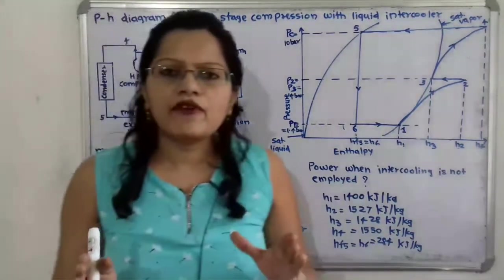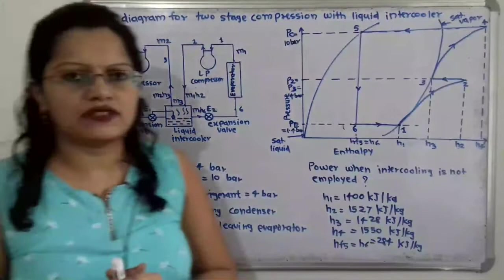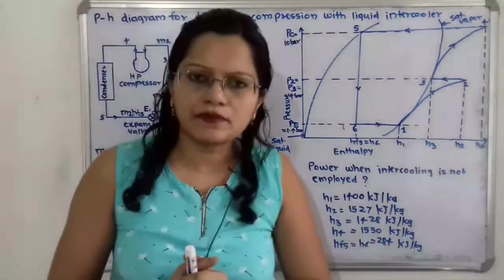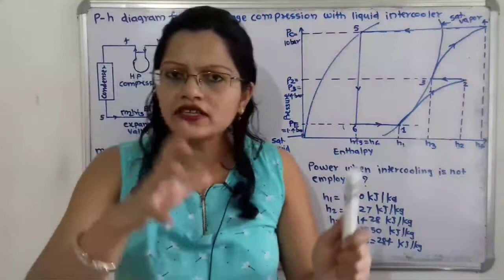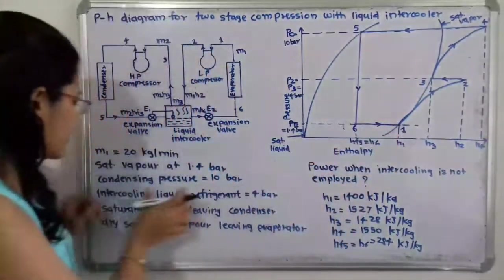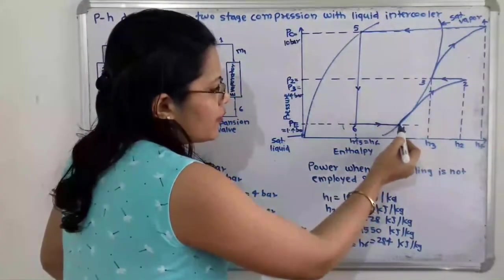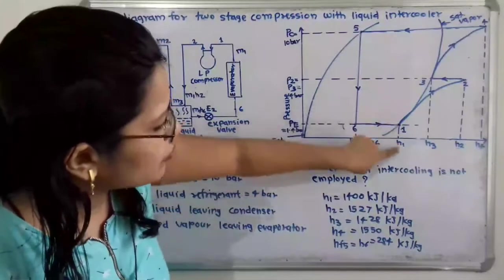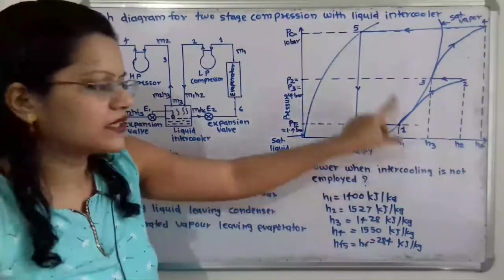This is the pressure before the refrigerant enters the compressor, that is at point 1. The refrigerant is leaving the evaporator, so we call this the evaporator pressure pe. We find the 1.4 bar pressure horizontal line on the chart. The refrigerant is at the saturated vapor line, so we find the point of intersection. On the enthalpy axis, the value of h1 is 1400 kJ/kg as per the given chart.